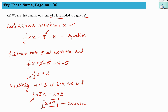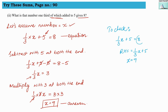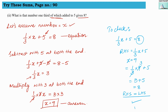Now let us check whether what we have found is correct or not. You do not need to write this in a notebook — it is just for confirmation. Our equation is one third of x plus 5 equals to 8. Substituting x equals to 9: one third into 9 plus 5. So 3 plus 5 equals to 8, which equals LHS. So our RHS equals LHS, meaning our equation and answer are both correct.